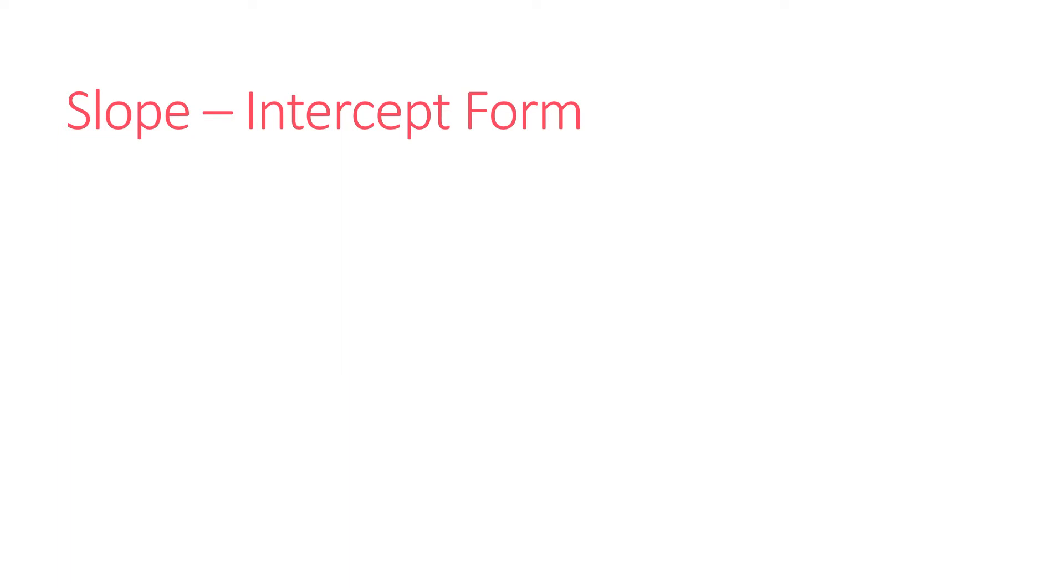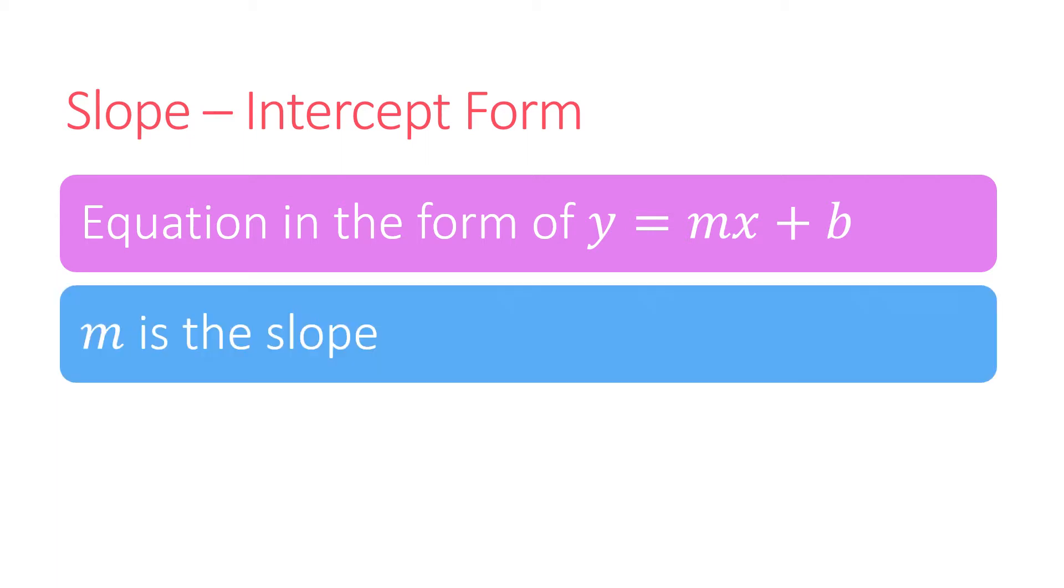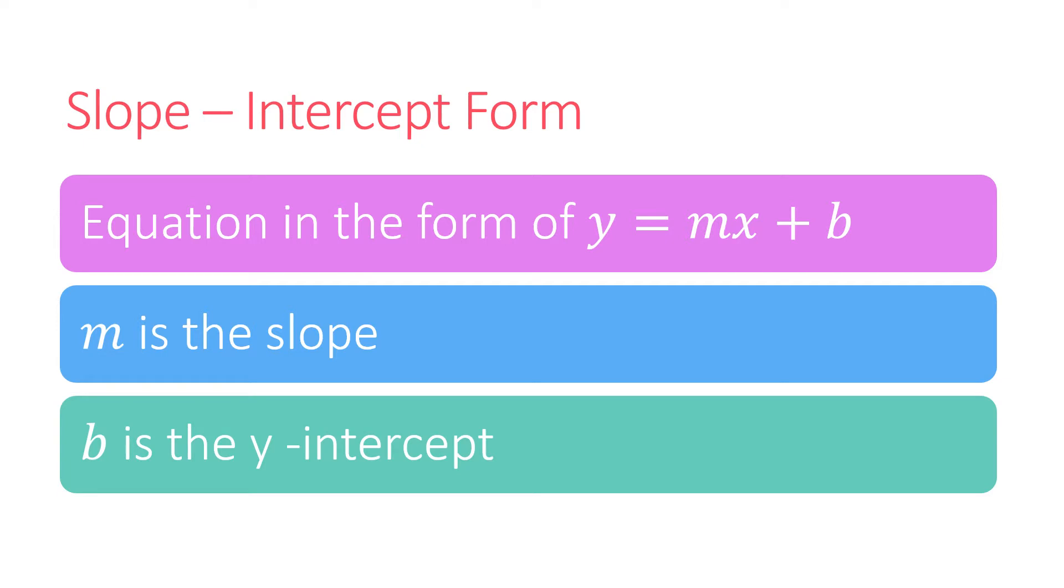Slope-intercept form is an equation in the form of y equals mx plus b, where m is the slope and b is the y-intercept.